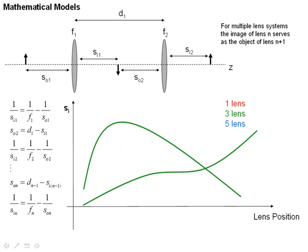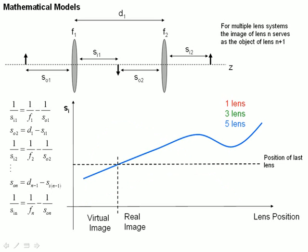When we go to a three-lens system, we come up with a second-order polynomial. Here are some examples of what the image distance as a function of lens position might look like. If we go to a five-lens system, that might be a fourth-order polynomial.